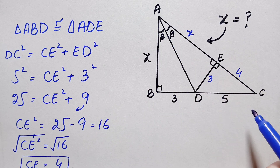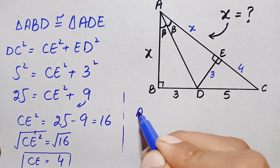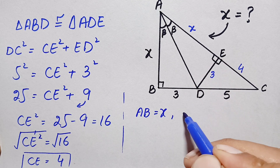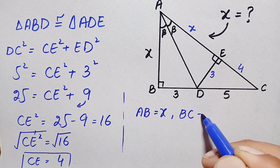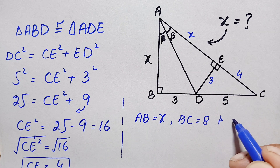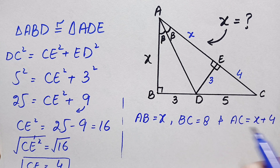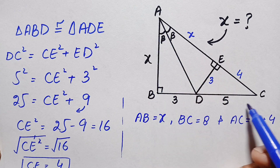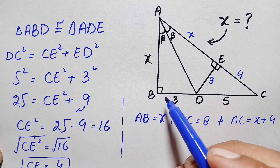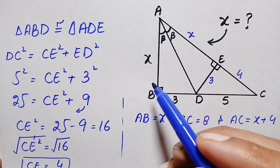Now look at the bigger triangle ABC. Here AB is x, BC is 3 plus 5 which equals 8, and AC equals x plus 4. Our target is to find the value of x, the height and perpendicular of this bigger triangle ABC. Since triangle ABC is a right angle triangle, we will apply the Pythagorean theorem again to find the value of x.